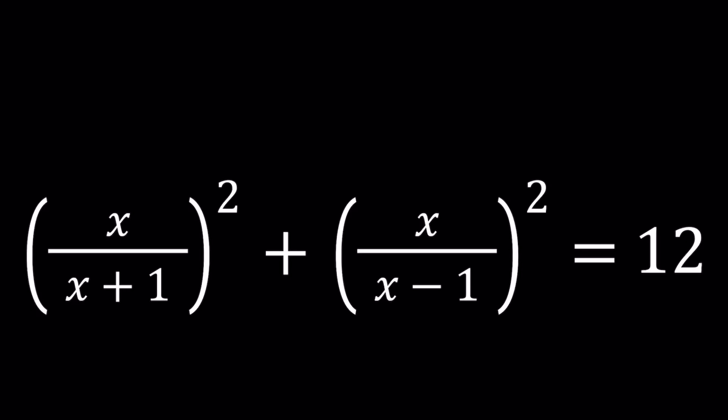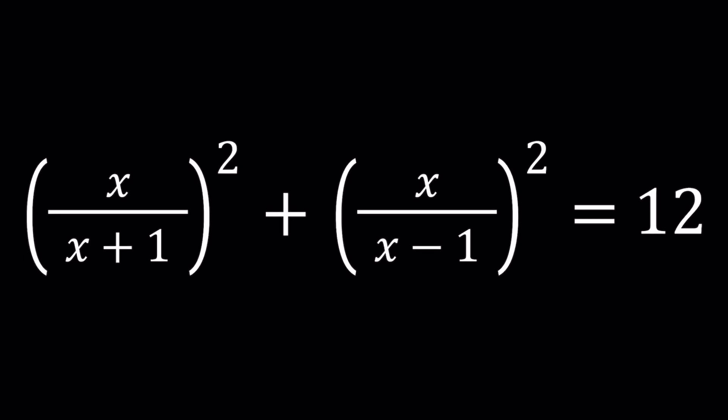Hello everyone. In this video we're going to be solving an equation. I didn't know what to call this - a rational equation, a quadratic, a rational quadratic, or maybe something else. Anyways, we have x over x plus 1 quantity squared and x over x minus 1 quantity squared and their sum is 12 and we're going to solve for x. I'll be presenting at least two methods and let's see how this goes.